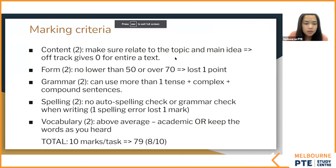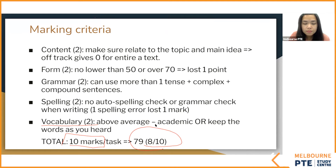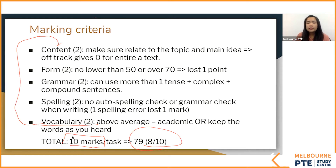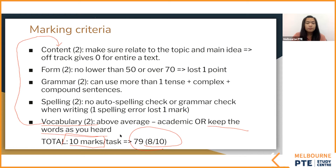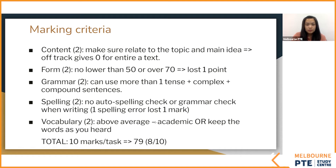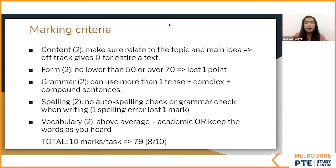If you aim for 79 plus, the target is to get at least 8 out of 10 for one summarize spoken text. In terms of vocab — remember why I say vocab is impacted by your content — whatever you listen to, you need to keep exactly the same words as you hear. Don't use synonyms. Using synonyms will kill your listening score.